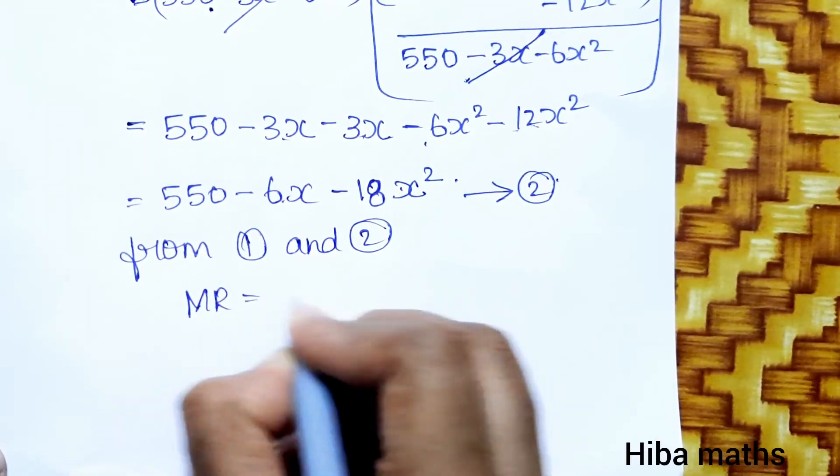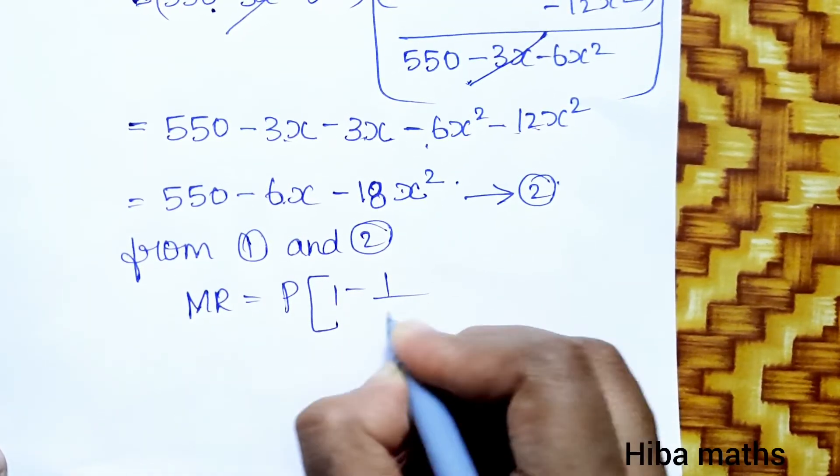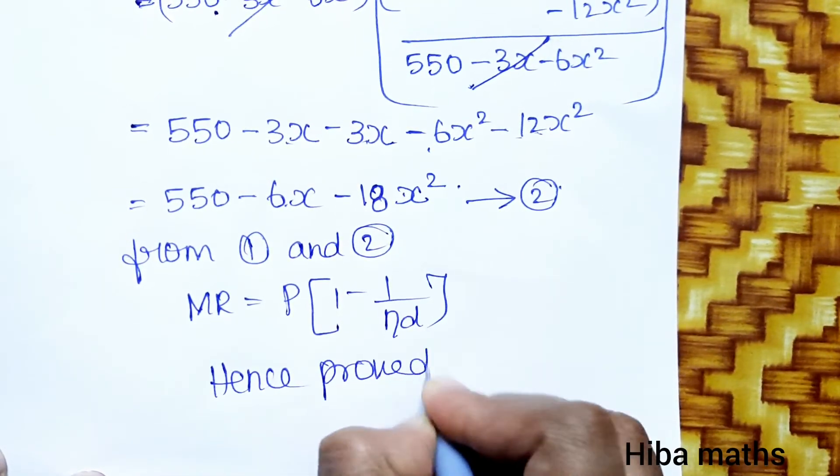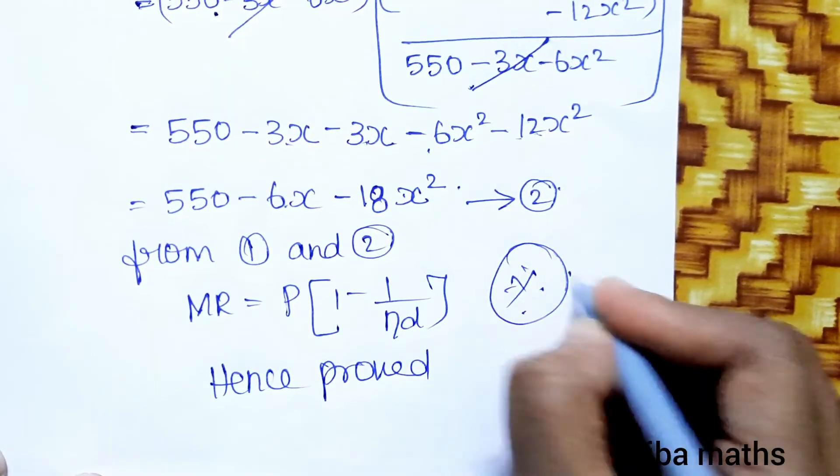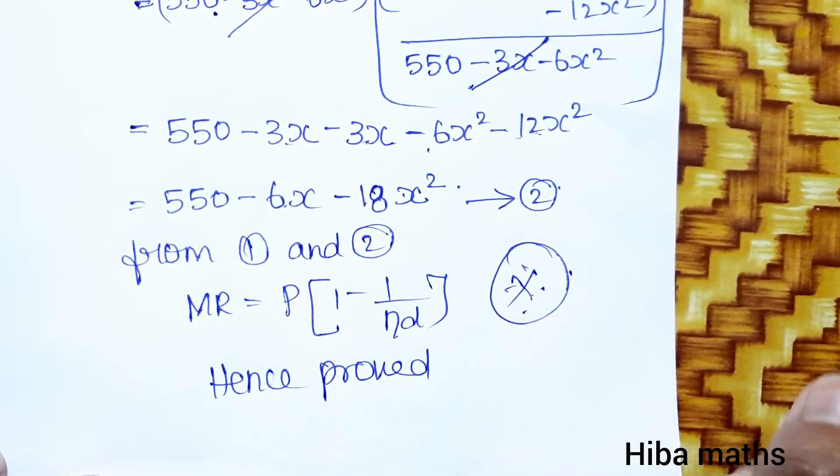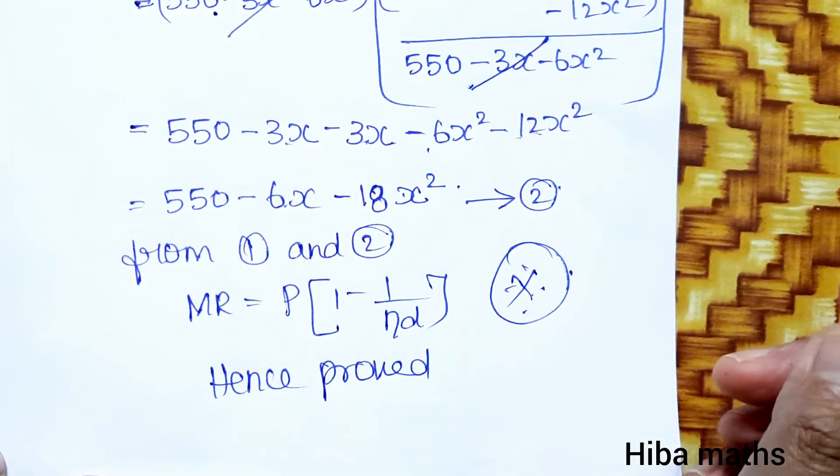So from equation 1 and 2, MR is equal to P into 1 minus 1 by eta d. Hence proved. If you have any doubt, comment in the comment section.